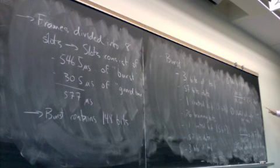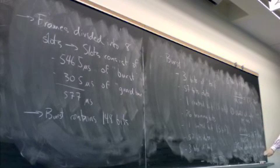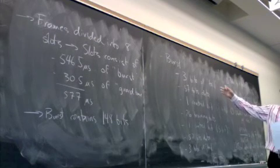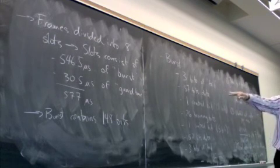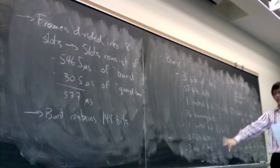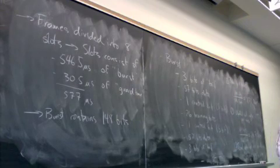So that's considerably less than the peak bit rate. This is because we have allocated all of this extra space to guard time, tail bits, training bits, and so on.